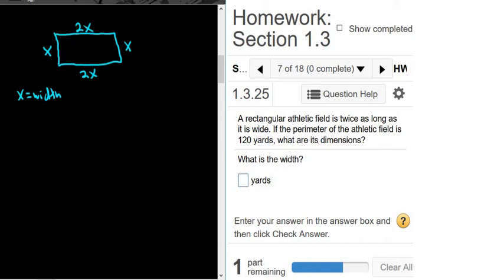Now we're told that the perimeter is 120 yards. The perimeter is the sum of the sides of the rectangular athletic field. So we just add all these up: x plus x plus 2x plus 2x. That's the total length around the rectangle, and that's equal to 120.